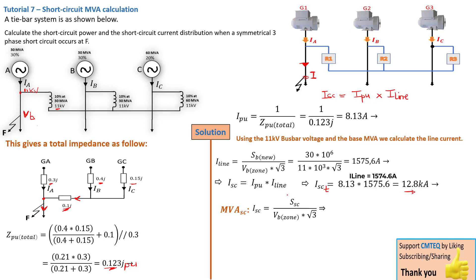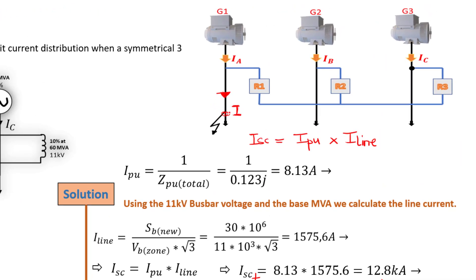We're just going to use the formula. For I line — this time denoting I short circuit — and making the MVA short circuit the subject, we get the following expression. Replacing the values, we get a fault of 243.9 megavolt-ampere — basically 244 MVA. This is the fault level at this point. In case of a short circuit, you have 244 MVA of fault level developing here.